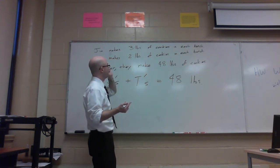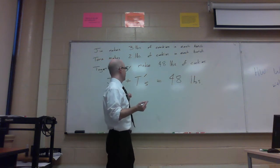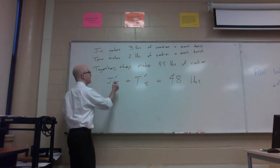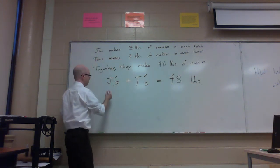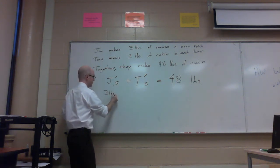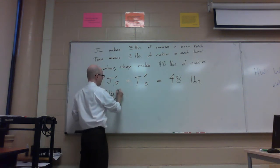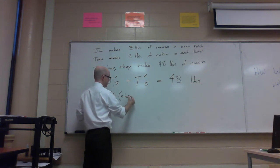And Tara is making batches of 2 pounds each. So we can think of it in terms of 3 pounds per batch times x number of batches.